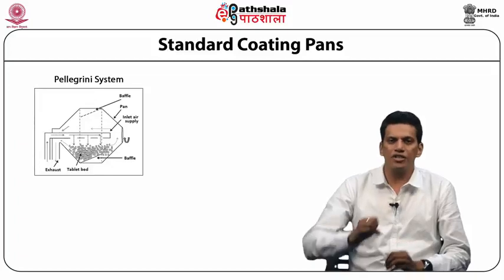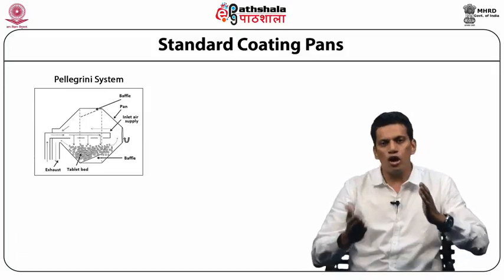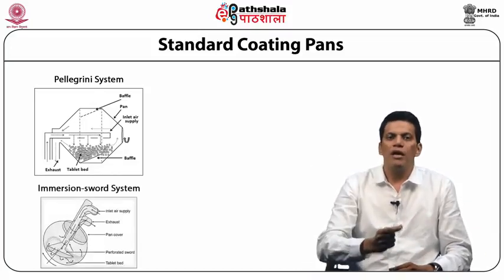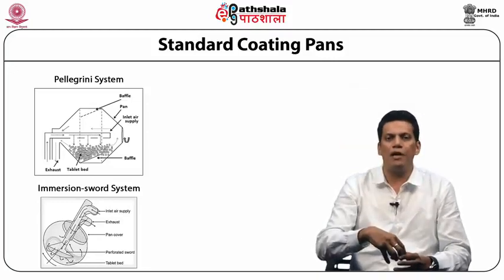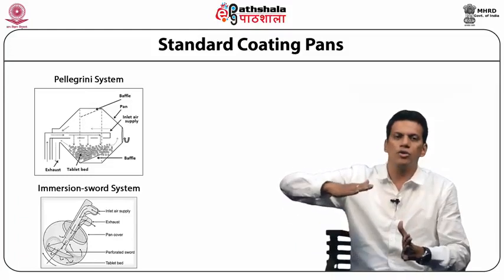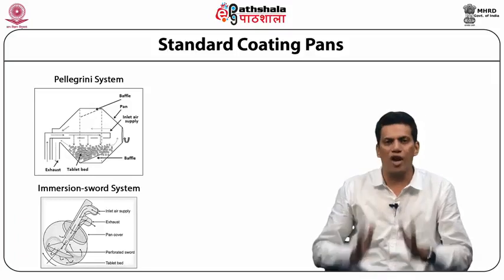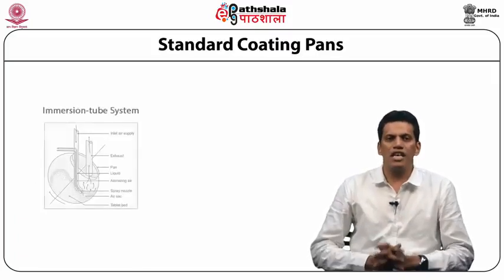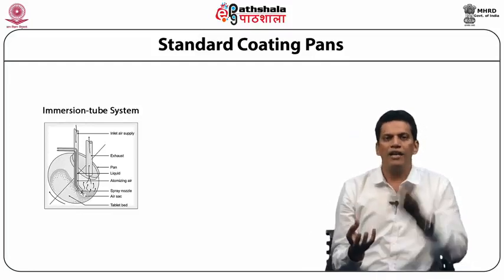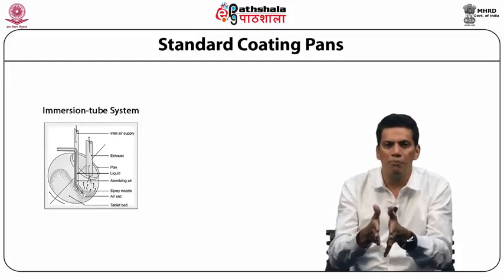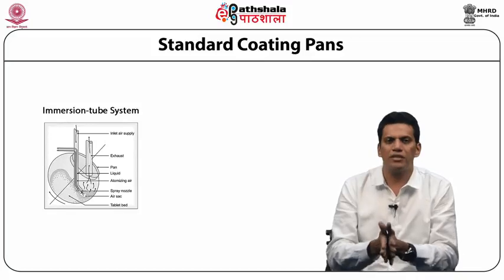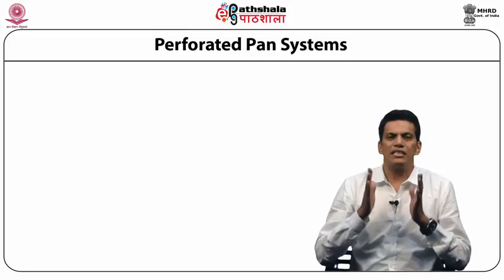The Pellegrini system consists of a diffuser that distributes the drying air and baffles in the pan for efficient mixing. The immersion sword system consists of a sword inserted into the tablet bed through which drying air is introduced. This results in movement of drying air through the tablet bed, intimate mixing, and efficient drying. The immersion tube system includes coating solution and drying air applied simultaneously through the immersed tube, resulting in intimate mixing and efficient drying of the tablets.